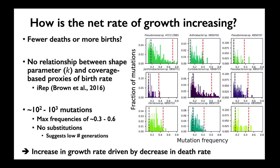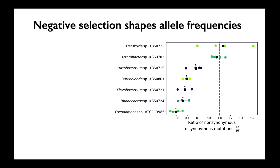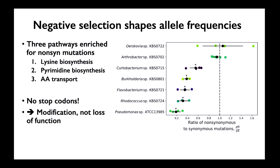Looking at the actual mutations, the proportion of non-synonymous to synonymous is lower than one, significant for five of the seven taxa with enough mutations for the analysis. Looking at genes that acquired more non-synonymous mutations than expected under a Poisson null model, three pathways were enriched in two of the seven taxa: lysine biosynthesis, pyrimidine biosynthesis, and amino acid transport. Importantly, none were stop mutations — suggesting modification of an existing function for the environment rather than loss to meet energetic demands.